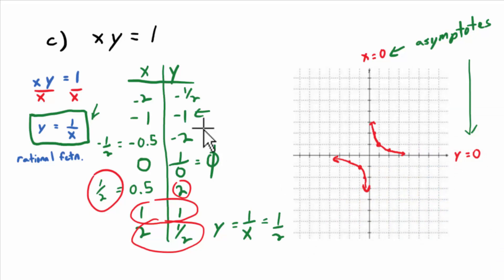So graphing a reciprocal function, you just plot some points. And any time you have a reciprocal function, whether, you know, in the homework you might get like y equals 2 over x or something like that, the x and y-axis will always be the asymptotes. Okay? Whether it's 1 over x or 2 over x or 4 over x or the opposite of 4 over x, you might have something like that in the homework. The asymptotes will remain the same.